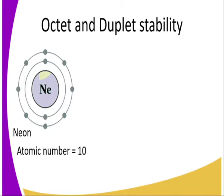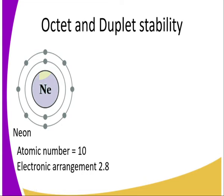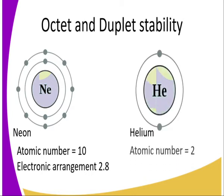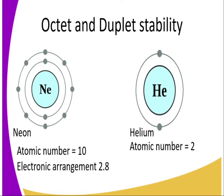For instance, we have neon and we also have helium, and these atoms are said to be chemically stable. Look at neon: atomic number 10, therefore electronic configuration is 2,8 — the first energy level with two electrons and the second energy level has eight electrons. Therefore this atom is chemically stable, so it cannot take part in a reaction under normal conditions — that's why it is said to be an inert gas. The same case applies to helium, atomic number 2, which is inert and stable.